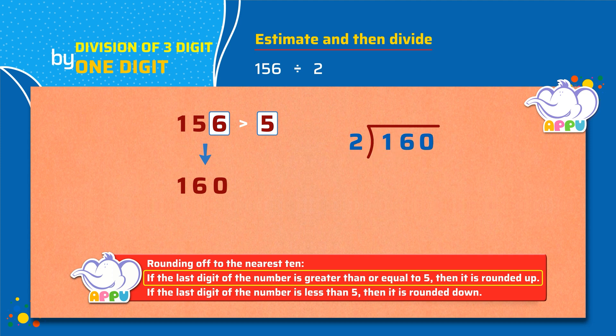Step 1: We cannot divide 1 by 2 since 1 is smaller than 2. So we consider the tenth digit as well. We figure out how many 2's does it take to make 16, which is 8.